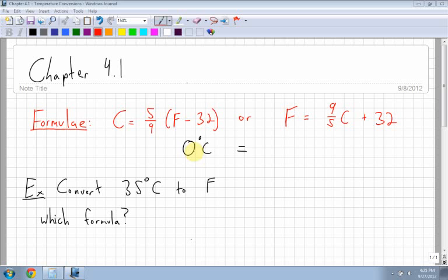First of all, I want to go through an example here. If I have zero degrees Celsius, because that's kind of an important temperature, especially in Canada where it's cold. So zero degrees Celsius is equal to how much Fahrenheit?